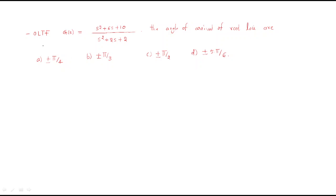Hello everyone. In this session we will discuss some more problems regarding the root locus. The first problem has an open loop transfer function given as G(s) equal to (s² + 6s + 10) / (s² + 2s + 2). The angle of arrival of root loci — the options are: (a) plus or minus π/4, (b) plus or minus π/3, (c) plus or minus π/2, (d) plus or minus π/6.